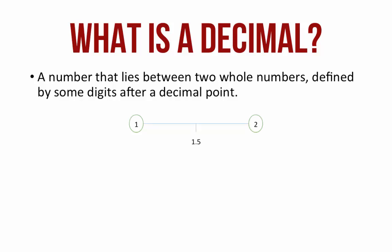For example, 1.5 lies between 1 and 2. 1.75 also lies between 1 and 2. Please note that the digits after the decimal point are always read separately. Hence, it is not "one point seventy-five," it is "one point seven five."